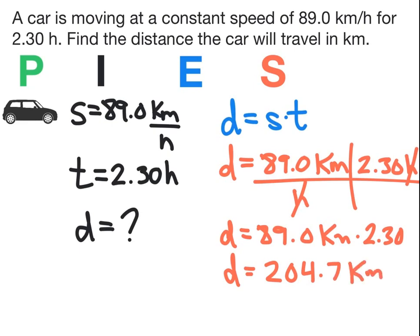Now we have to go back up and look at the significant digits in the numbers that the question gave us. 89.0 has three significant figures. 2.30 also has three significant figures. So our final answer must have three significant figures. We rewrite that number as 205 km.